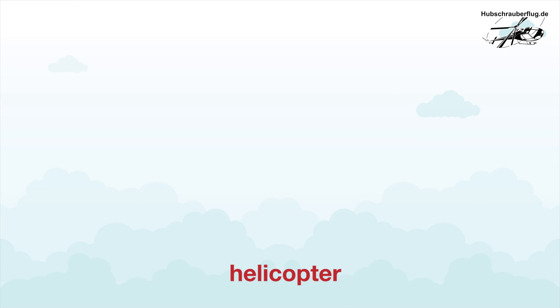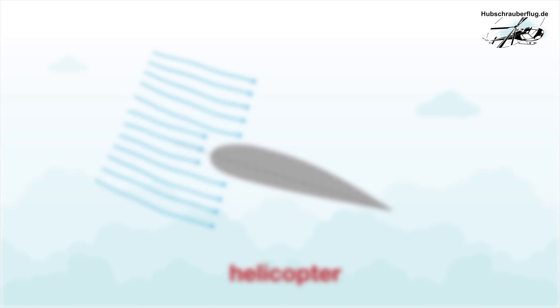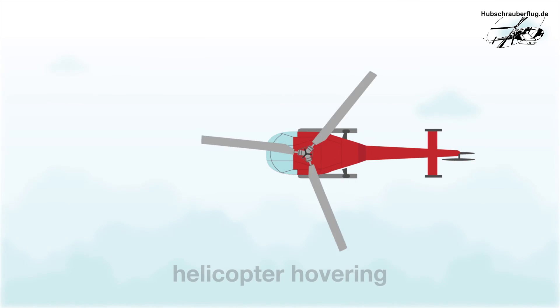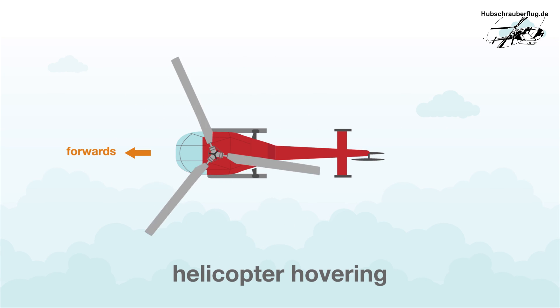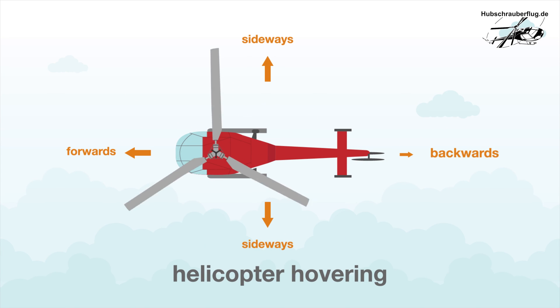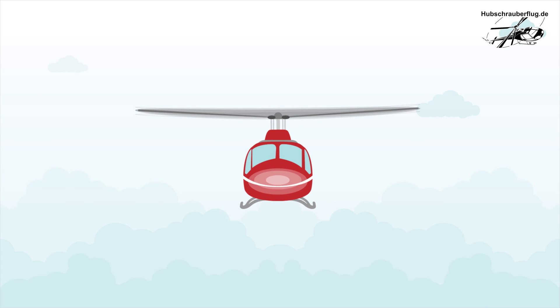This happens because the angle of incidence and angle of attack of all of the rotor blades increases simultaneously. The constant rotation allows helicopters to fly forwards, sideways and backwards, or hover in the air. When hovering, the aerodynamic forces are distributed symmetrically over the rotational radius.